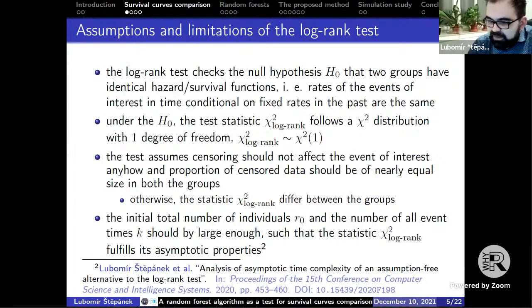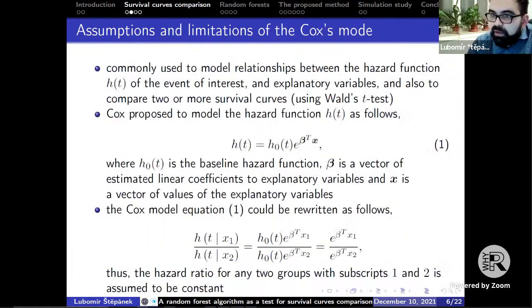If the survival functions or survival curves are similar enough, the log-rank test assumes that the censoring shouldn't affect the event of interest anyhow, and the proportion of censored data should be of nearly equal size in both groups. Otherwise, the chi-square statistic differs between the two groups.